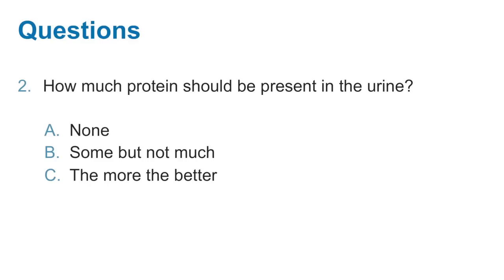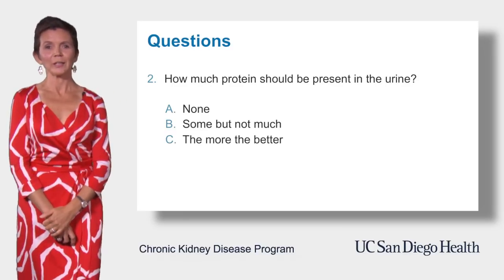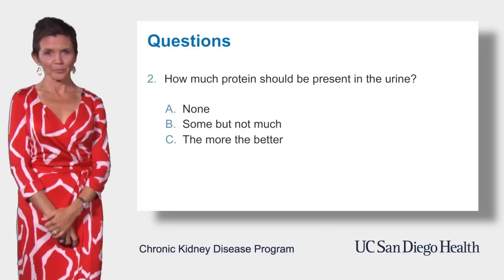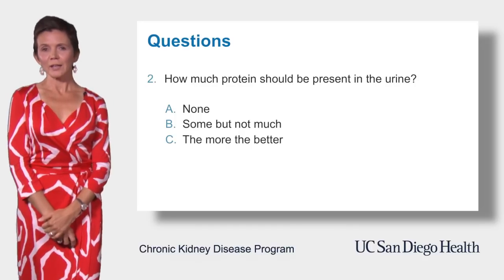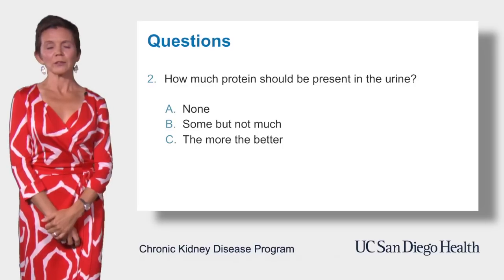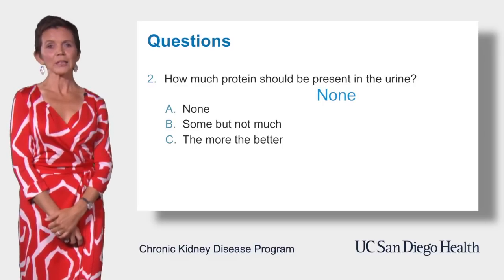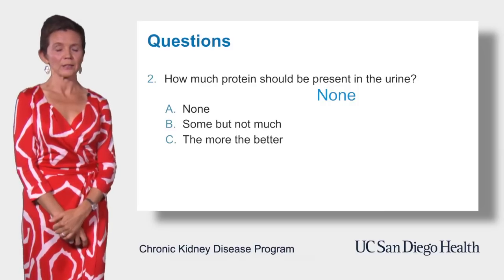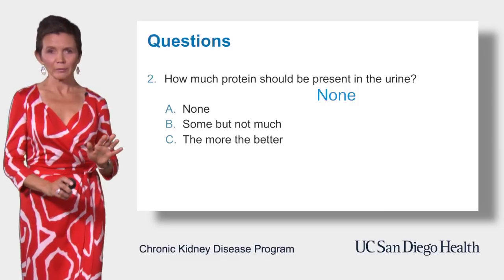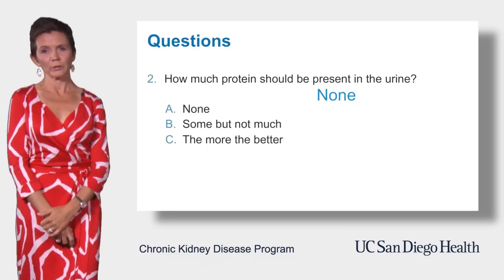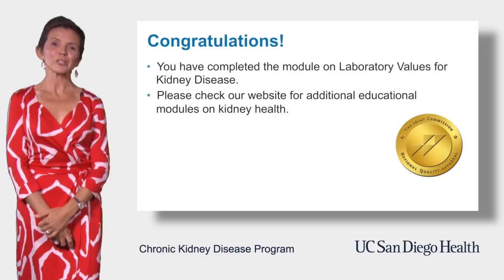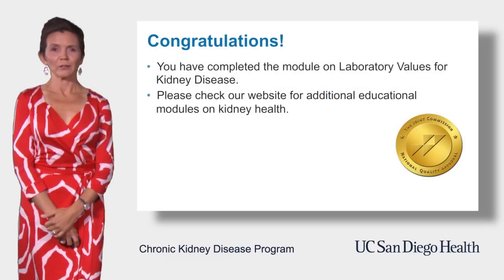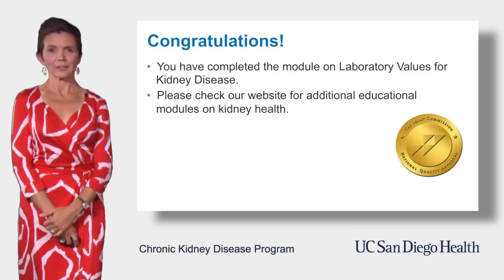Question number two: how much protein should be present in the urine? Option A: none. Option B: some but not too much. Option C: the more the better. The correct answer is that there should be absolutely no protein in the urine. Protein in the urine is a risk factor for worsening kidney function over time, and we do everything we can to minimize the amount of protein in the urine.